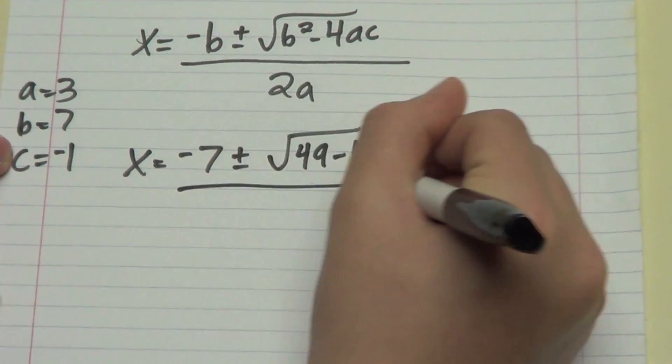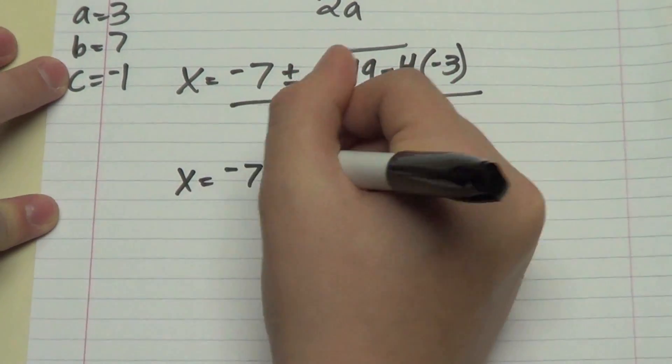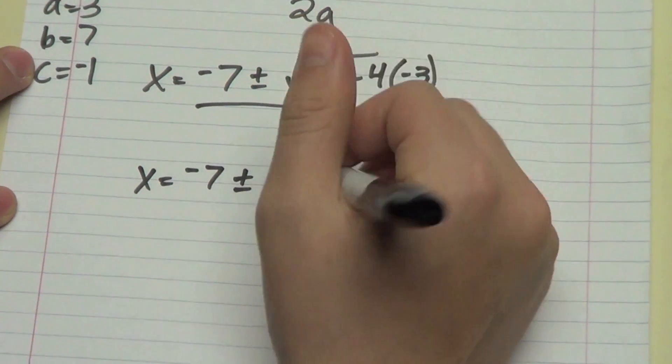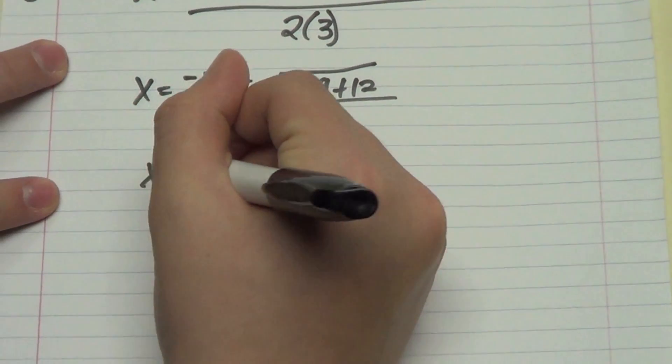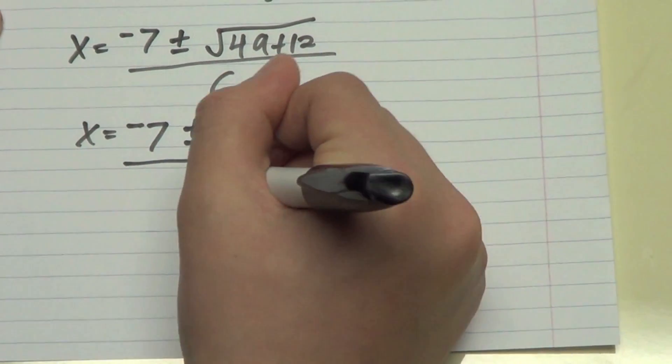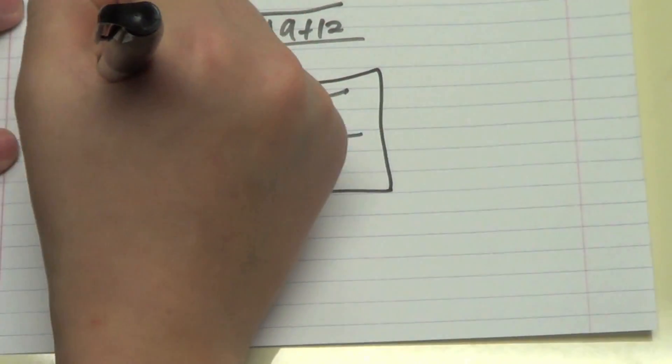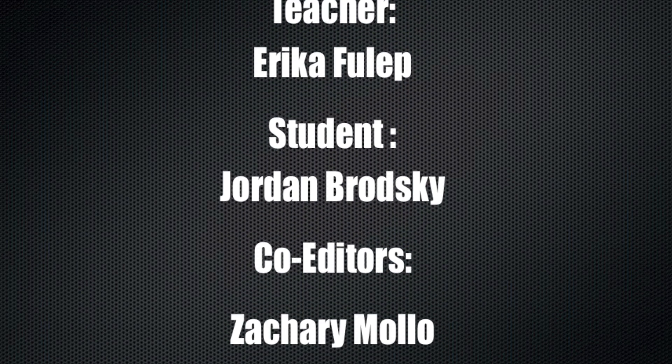So x equals negative 7 plus or minus rad 49 plus 12 all over 6. x equals negative 7 plus or minus rad 61 over 6.